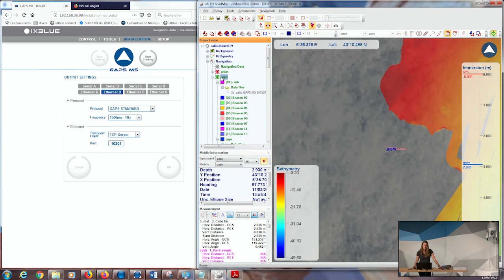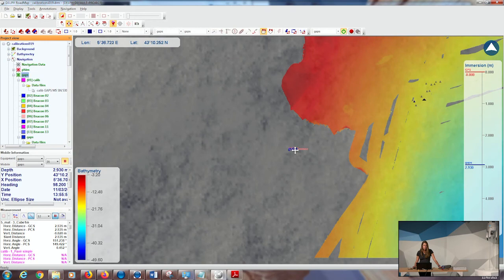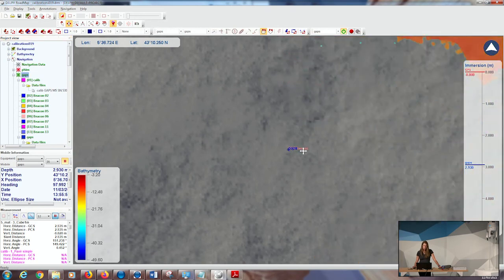Now I can see in Dell FrontMap, as soon as I am connected, I can check on the full screen the GAPS and the GPS sensor. If I do a zoom in, I can see I have my GAPS and my GPS.